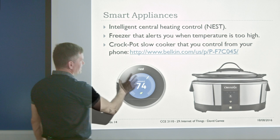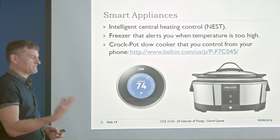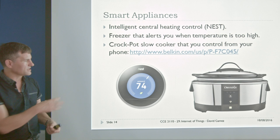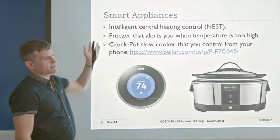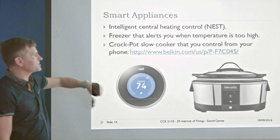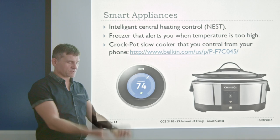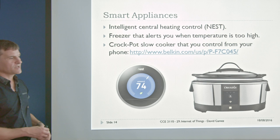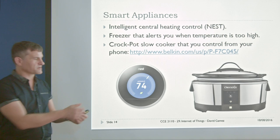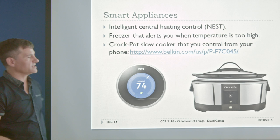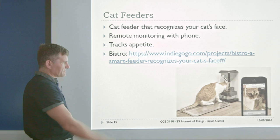Then we have smart appliances. Nest is leading this with their smart thermostat, becoming market and technology leaders. You can imagine a freezer that tells you when the temperature's too high, an intelligent central heating control, a crock pot you control from your phone. You put your ingredients in, and when you find you've got an important meeting and you'll be home late, you configure it from the internet to start cooking a bit later.